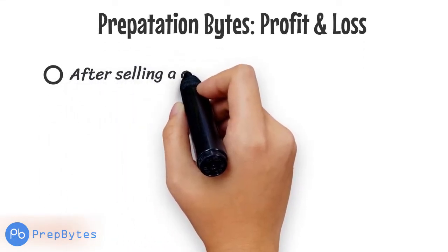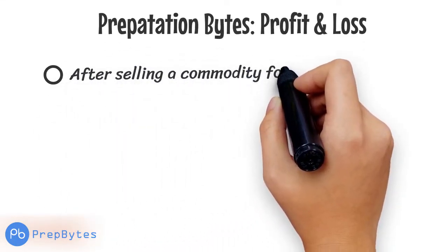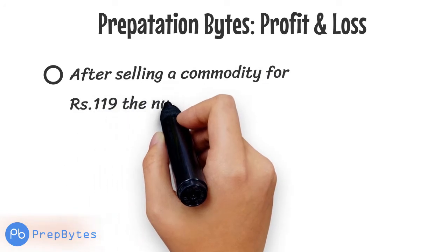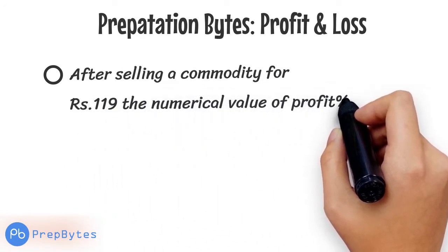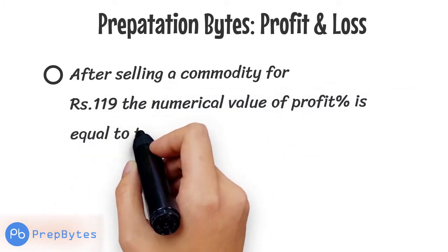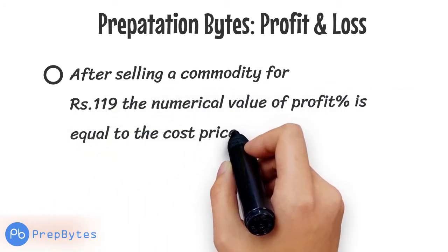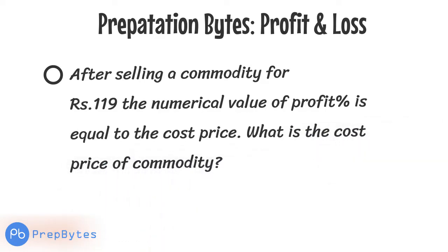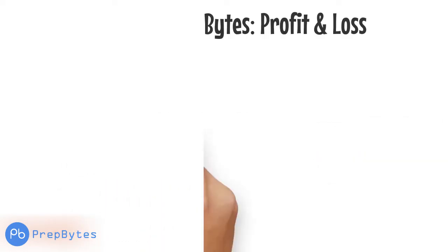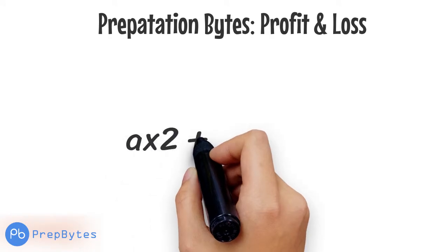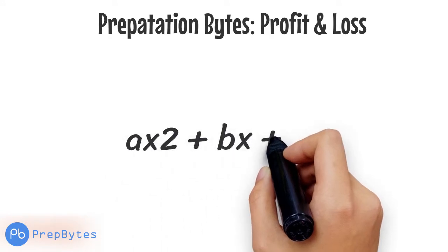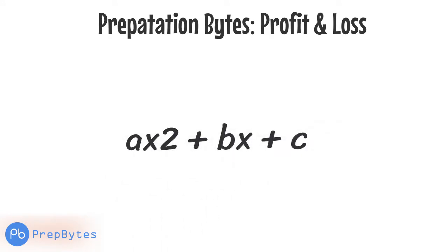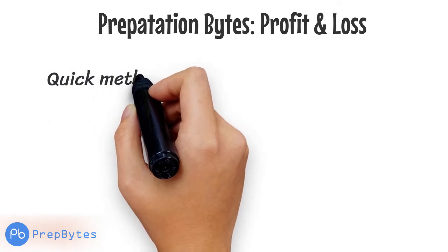After selling a commodity for 119 rupees, the numerical value of profit percent is equal to the cost price. What is the cost price of the commodity? The traditional method leads to a quadratic equation, taking too much time to solve. Here is the quick method.